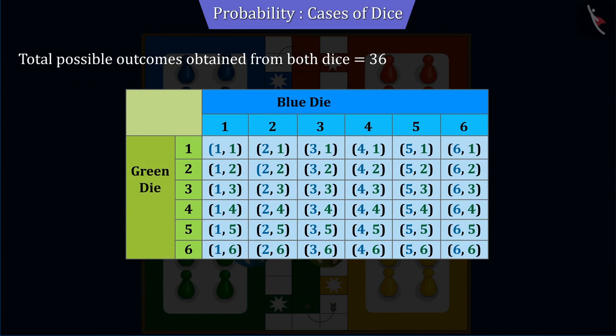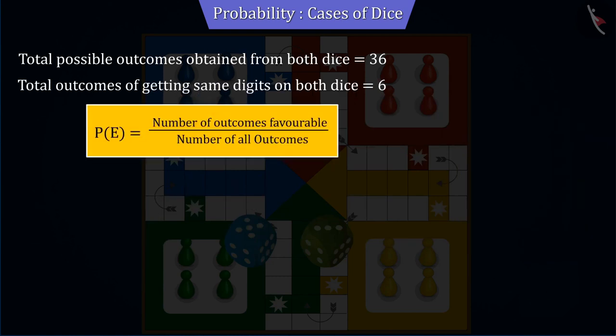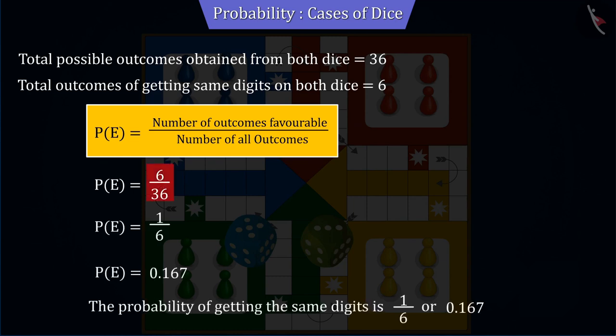Here we have to find the probability of getting the same number. We can see that there are 6 different outcomes having the same digit on both dice, so the total number of favorable outcomes is 6. Using the probability formula, the probability of getting the same number is 6 by 36, or 0.167.